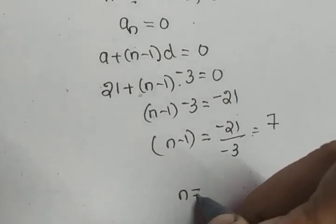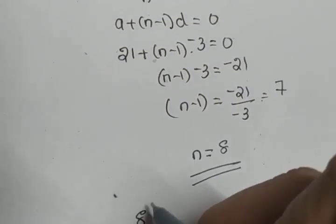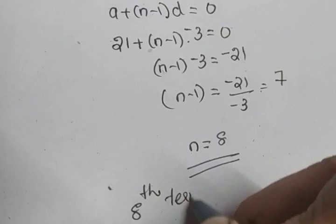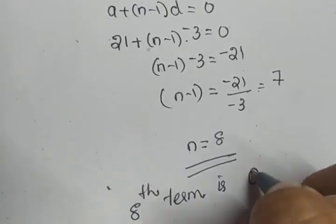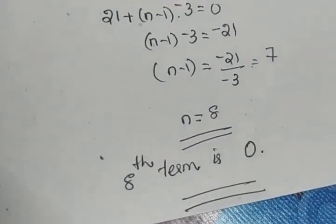So n equals 8. So what is the conclusion? Eighth term of the given AP is 0. Eighth term of the AP is 0.